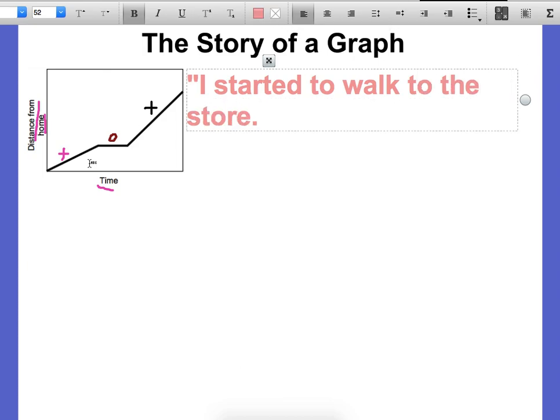And then with a zero slope, see that the distance isn't changing. The time changes because time is always passing. So the distance doesn't change. They don't go back home. They don't move towards the store here. So since the distance does not change, we can say, I stopped to take a break.